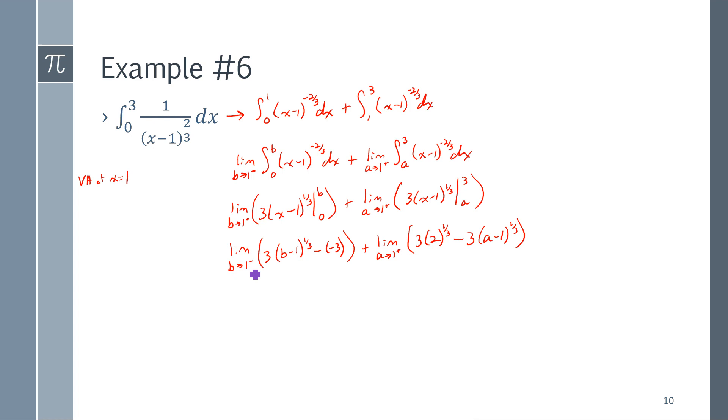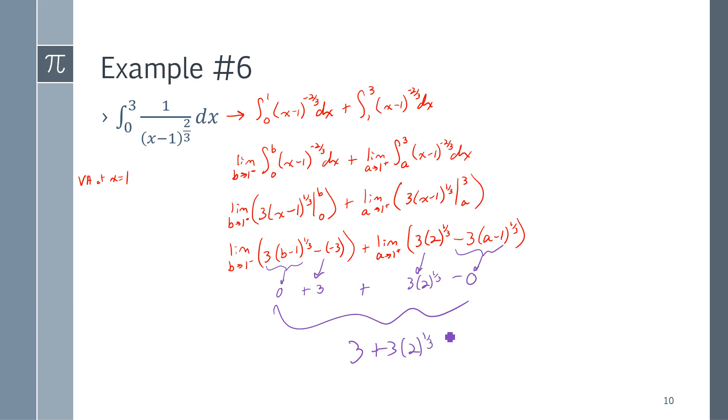So, if B is approaching 1 from the left, that's becoming 0. So, that approaches 0. That's a plus 3. This is a 3 times 2 to the 1 third. And if A is approaching 1, this all approaches 0. And so, I get 3 plus 3 times 2 to the 1 third. And this is what this integral is converging towards.